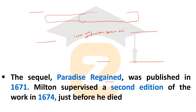The sequel to Paradise Lost, called Paradise Regained, was published in the year 1671. Milton supervised the second edition of this work in 1674, just before he died. The year 1674 marks the death of John Milton, and his life spanned from 1608 to 1674.